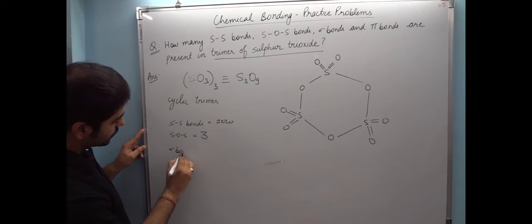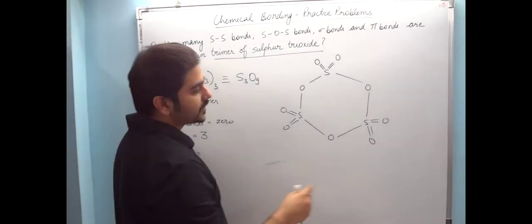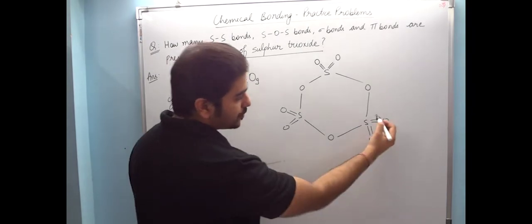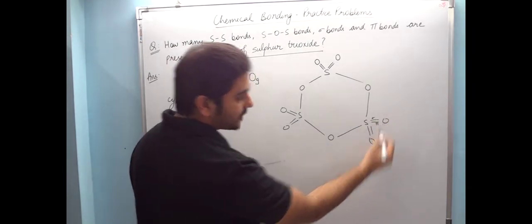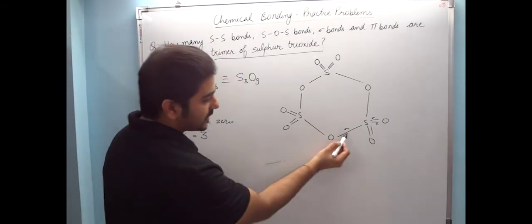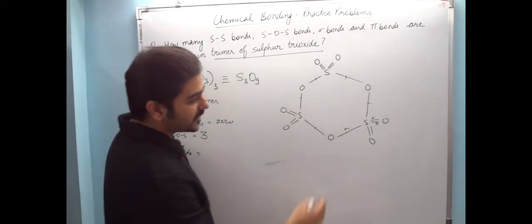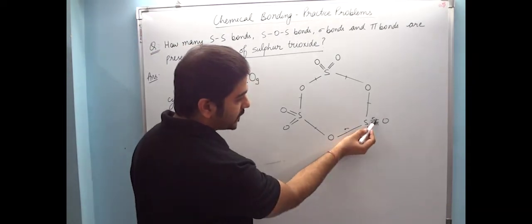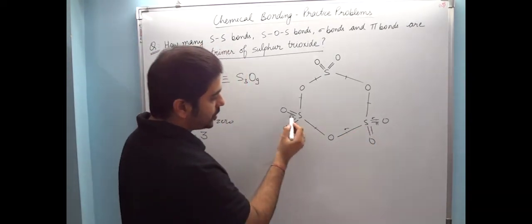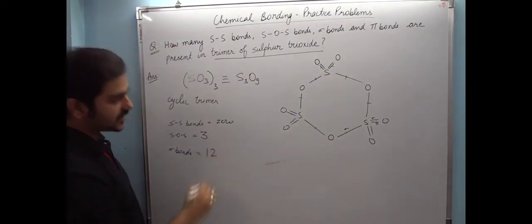Then sigma bonds. Now which are the sigma bonds? One, two, three, four, five, six, seven, eight, nine, ten, eleven, twelve. So the answer is sigma bonds are 12.